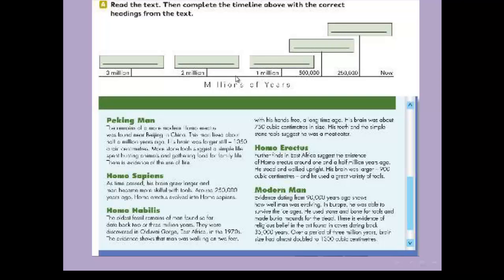Peking Man: The remains of more modern Homo erectus was found near Beijing in China. This man lived about half a million years ago. His brain was larger still, 1,050 cubic centimeters. Stone tools suggest a simple life spent hunting animals and gathering food for family life. There is evidence of the use of fire.